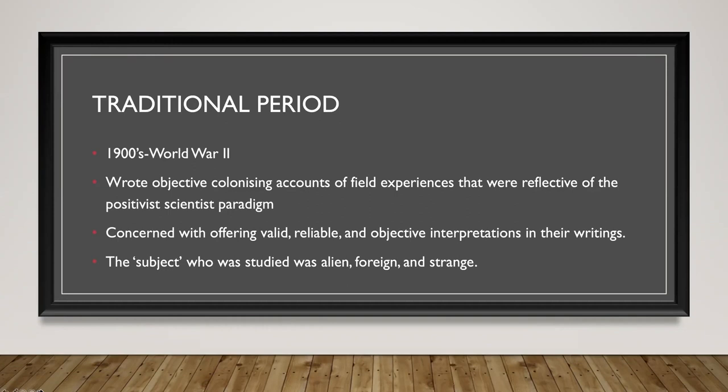In the traditional period, qualitative research was concerned with offering valid, reliable, and objective interpretations of the data. The subjects typically studied were alien, foreign, or strange. For example, here in the United States there is a fairly large body of qualitative research that goes along with the Tuskegee studies. Those Black individuals who were part of the Tuskegee studies were the quote-unquote alien, foreign, or strange subjects of those qualitative studies.